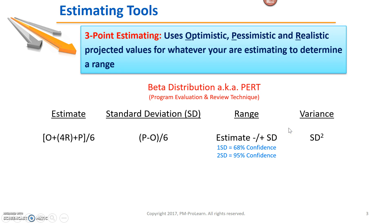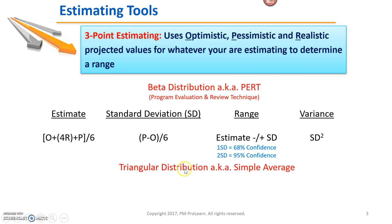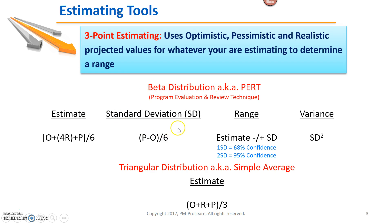We also saw a term called variance in the question. Variance is determined by taking the standard deviation and squaring it. If you square the standard deviation, it gives you the variance. Now, if you use a simple average, that's also called a triangular distribution — that's just adding the three numbers together and dividing by three, a simple average you learned in elementary school. The trick on the exam: if you see the term triangular distribution, use the simple averaging method. But the default method on the exam is to use the beta distribution, which requires a couple more steps.